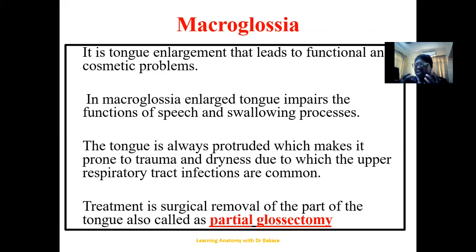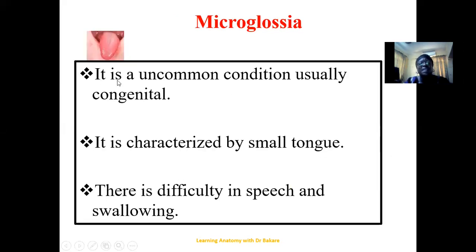Macroglossia means having a big tongue in the mouth, which impairs speech and swallowing because the tongue cannot manipulate itself to assist in digestion. This can be surgically treated through glossectomy — the removal of a part or region of the tongue to reduce its size. Microglossia means having a very small tongue. This is an uncommon congenital abnormality that also results in difficulty with speech and swallowing.